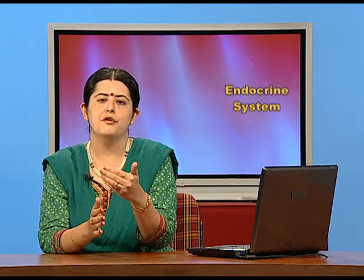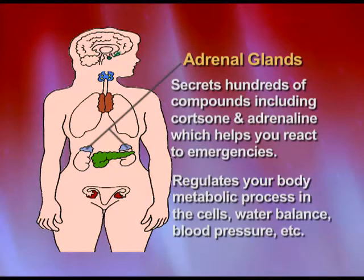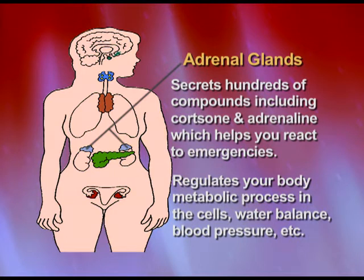The last gland is the adrenal gland, which comprises two parts: the adrenal medulla and the adrenal cortex. The adrenal cortex releases ACTH — adrenal corticotrophic hormone — as a stimulating hormone starting from the anterior pituitary. Its major function involves corticoids and cortisol, which maintain the sodium-potassium balance in the body.